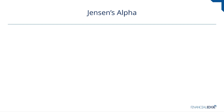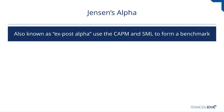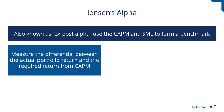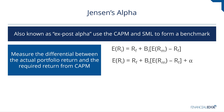Jensen's alpha is a different take on alpha in the sense that it uses the CAPM framework and the security market line to form a benchmark to compare the portfolio to. It's also sometimes referred to as ex-post alpha. With Jensen's alpha, the measure is the difference between the portfolio's return and the required return as calculated by the CAPM model, where the expected return equals the risk-free rate plus beta times the equity market risk premium. If these two do not equal, alpha is present, depicted by the Greek symbol for alpha.